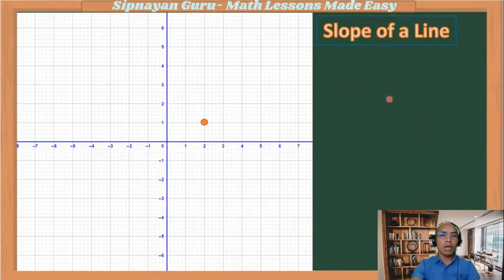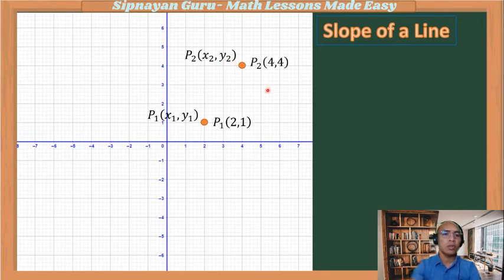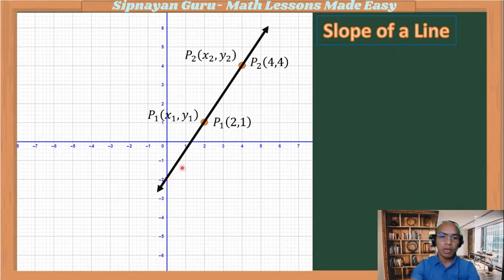For the slope of a line, if this is point one, take note: in an ordered pair the first number is always x and the second number is always y. The coordinate of point one in this Cartesian plane is (2, 1). Suppose we have another point — point two — with coordinates (4, 4), both in the first quadrant. According to the postulate that two points determine a line, connecting these two points gives us a line. How do we determine the slope of this line?